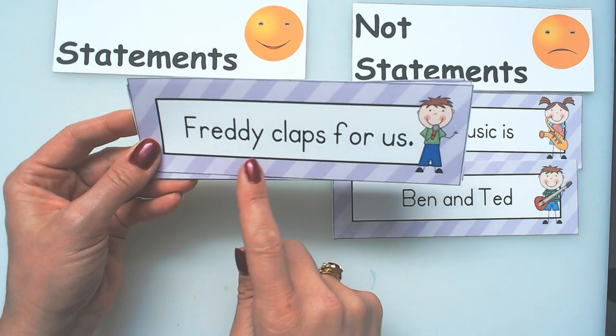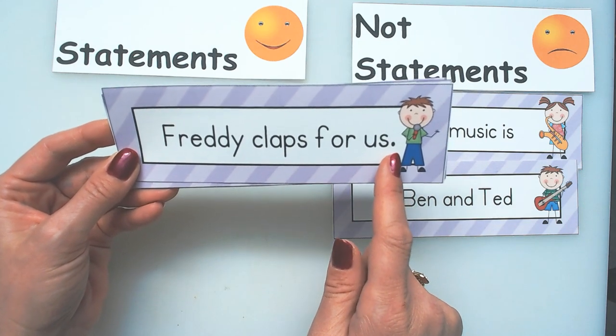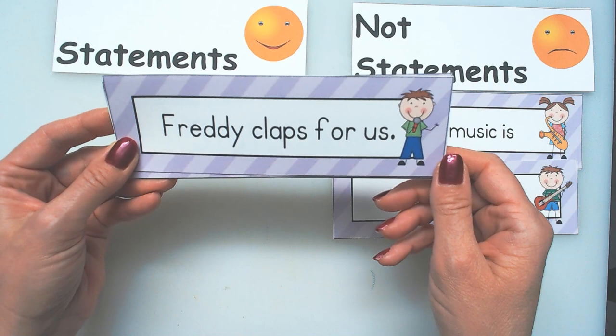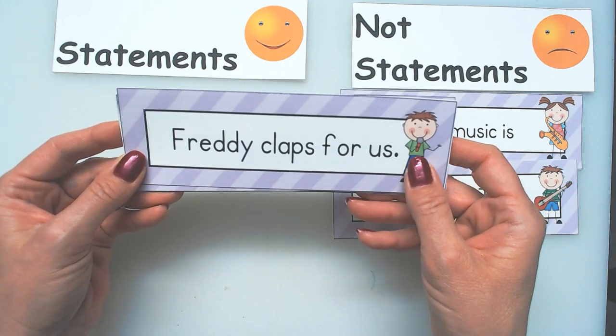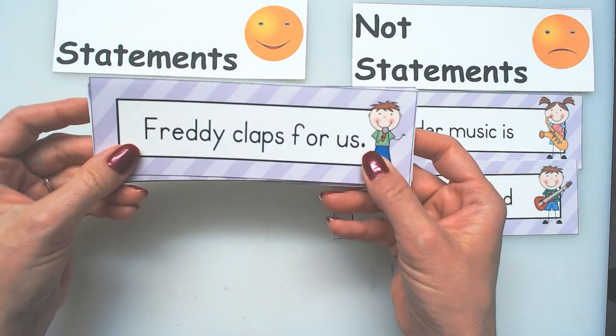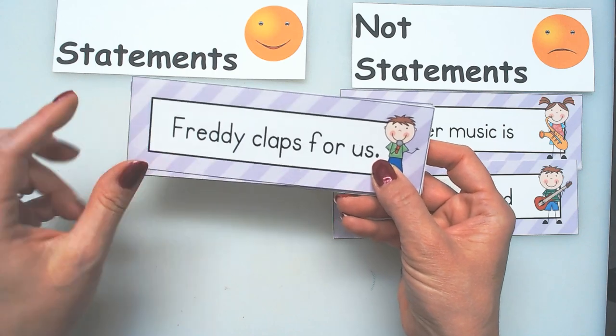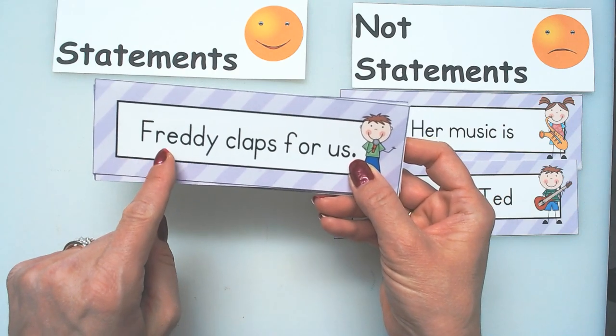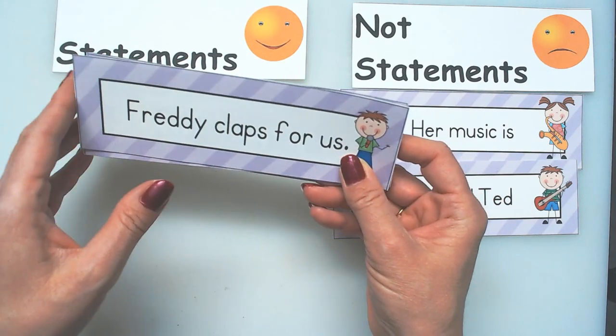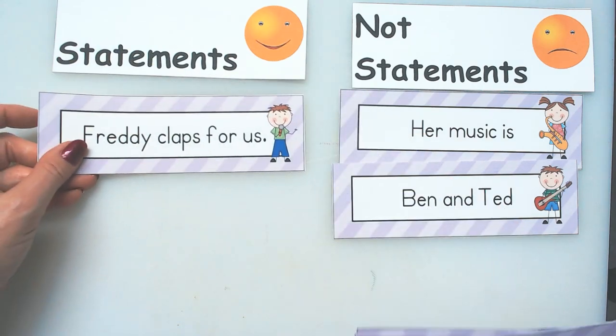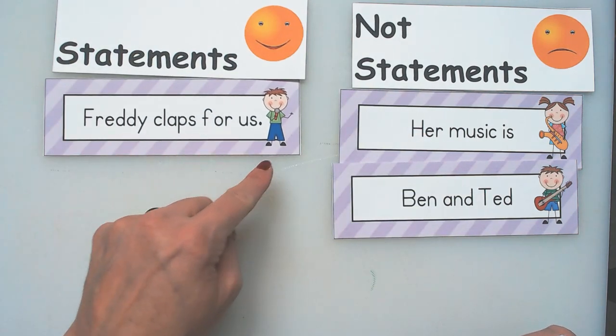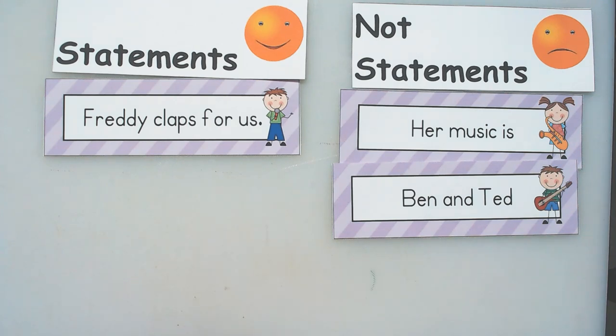Freddy claps for us. It is a statement. Ends with a period. Number one, number two, it has a noun and an action part. It tells us who and what they did. Freddy claps for us.